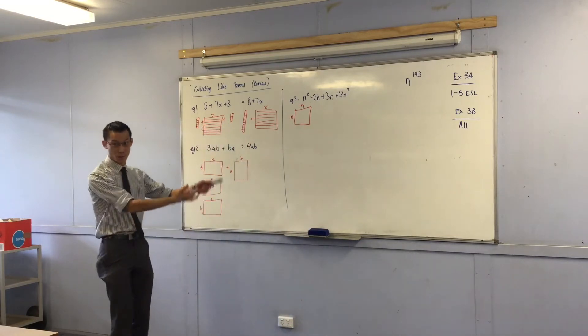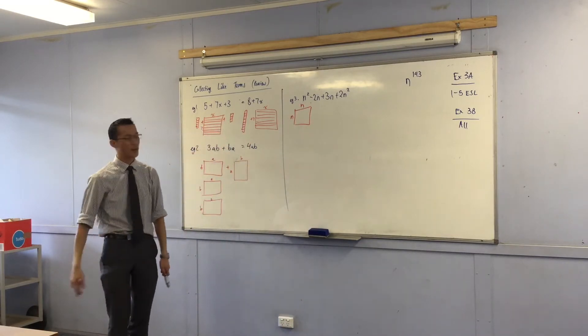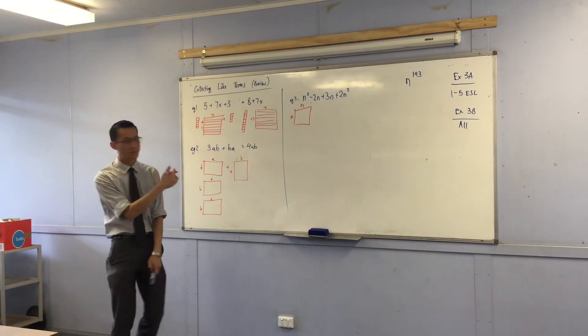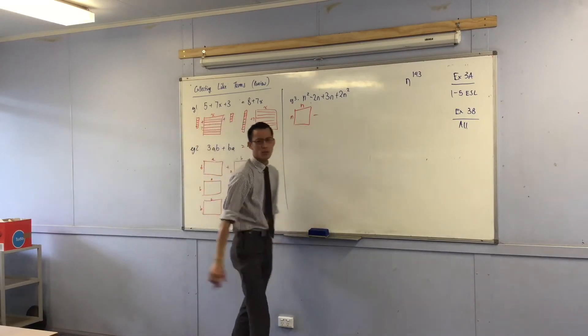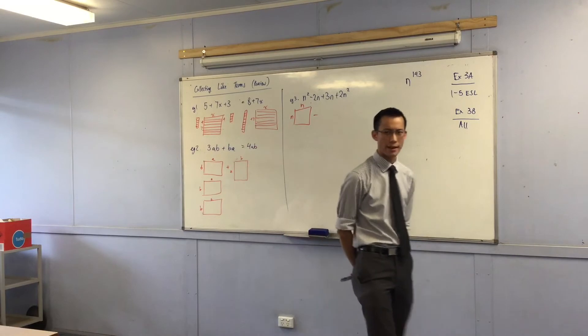So there's n squared out the front. How am I going to do the rest of this? What's it going to look like?